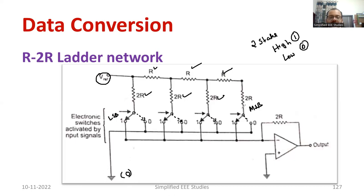Now, the output of this R2R ladder is going to provide to the summing amplifier. You can use LM741 as a summing amplifier. So this is your feedback resistor.